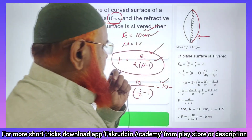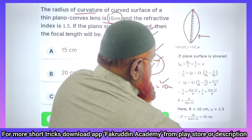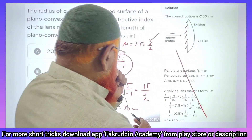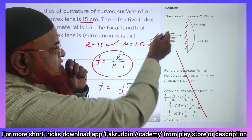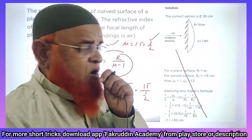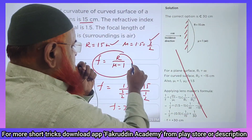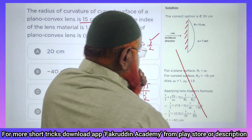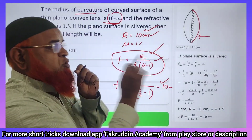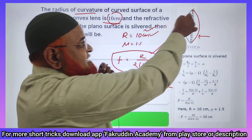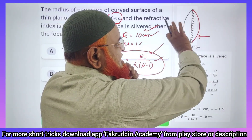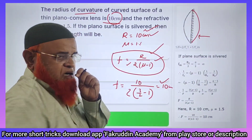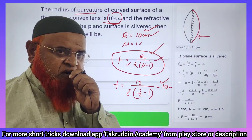In this problem where it is an unsilvered plano-convex lens, you get the formula f = R/(μ-1), whereas when it is silvered, the formula is R/(2μ-1). Since it is silvered, the mirror image becomes a convex lens — effectively doubling it — so you have to apply 2 in the denominator. Hope you have enjoyed, thank you very much.